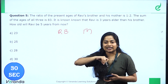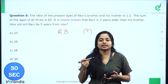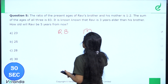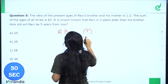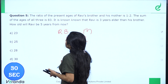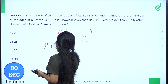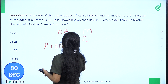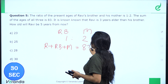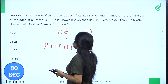30 seconds. The ratio of present ages of Ravi's brother and his mother is 1 is to 2. The sum of the ages of all three — Ravi, Ravi's brother, and Ravi's mother — is 83. It is known that Ravi is 3 years older than his brother.